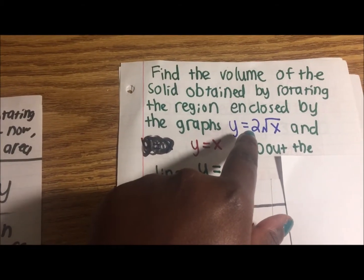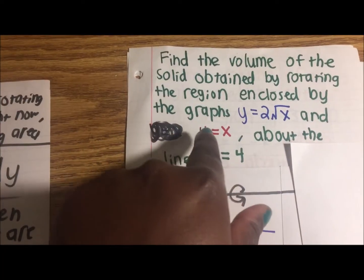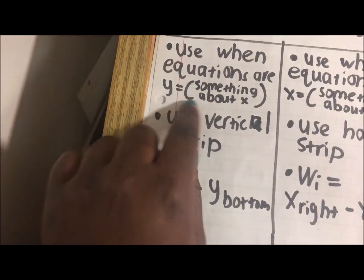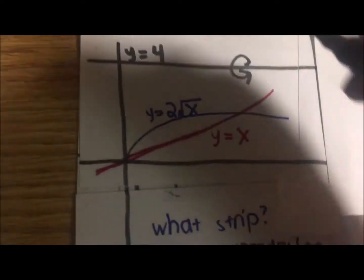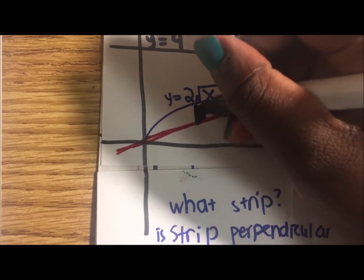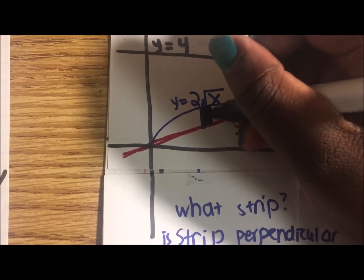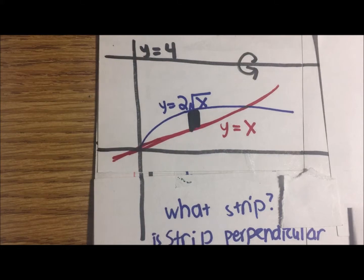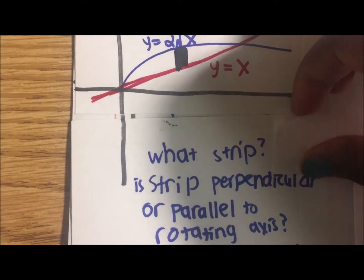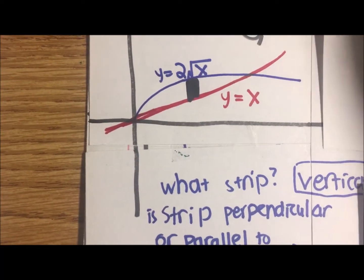So y equals 4 is our rotating axis. The equations are y equals 2 square root of x and y equals square root of x — both are y equals something in x, so we use a vertical strip.